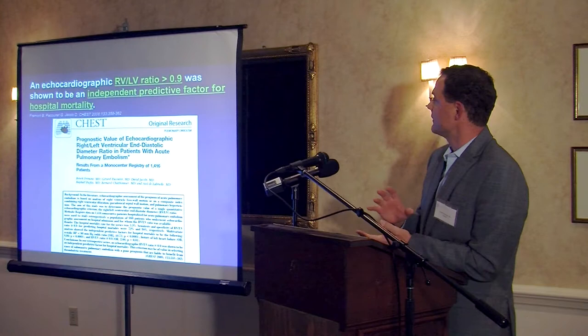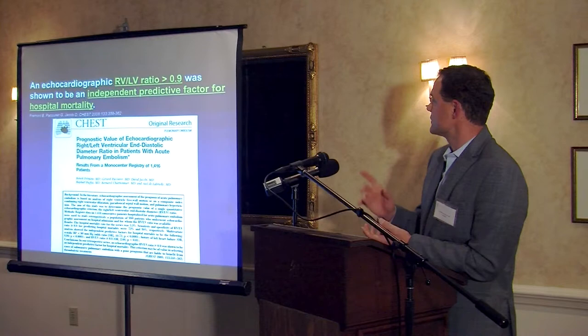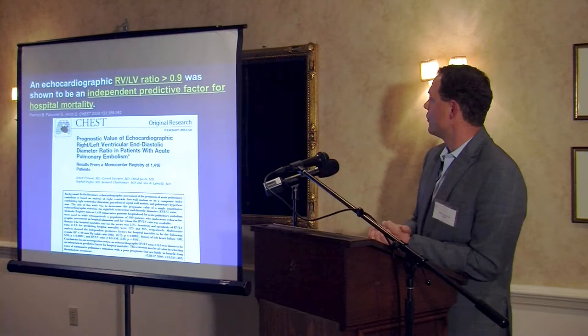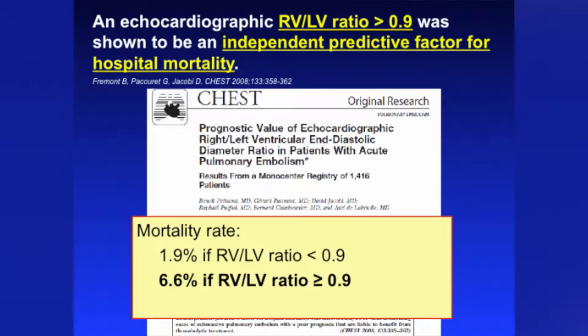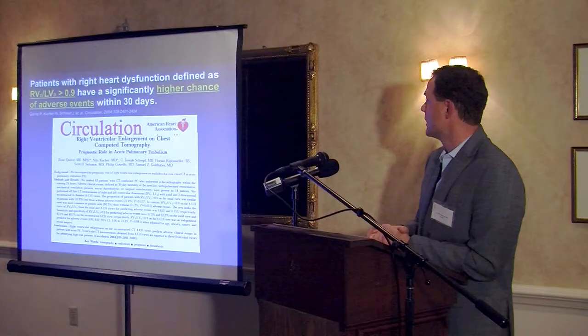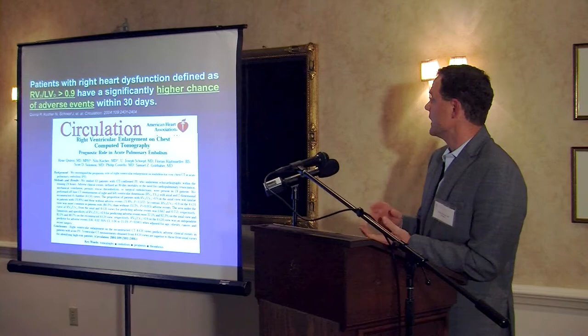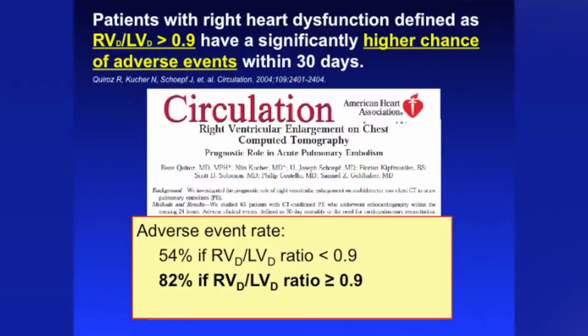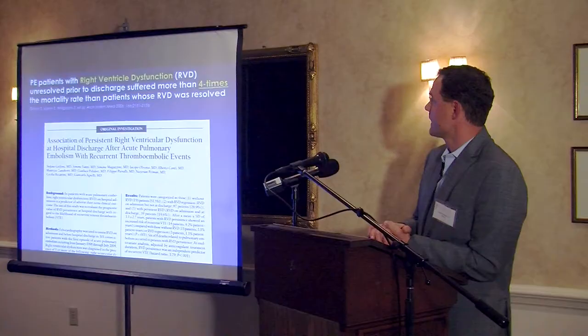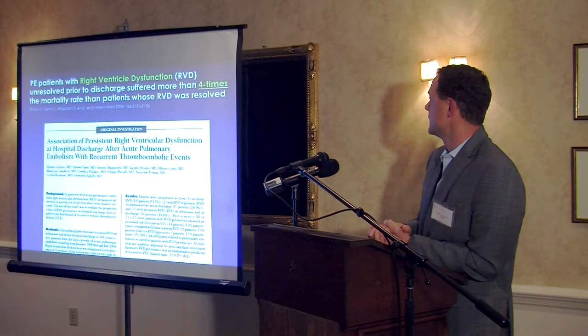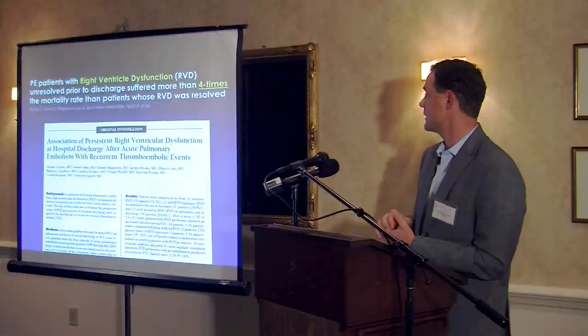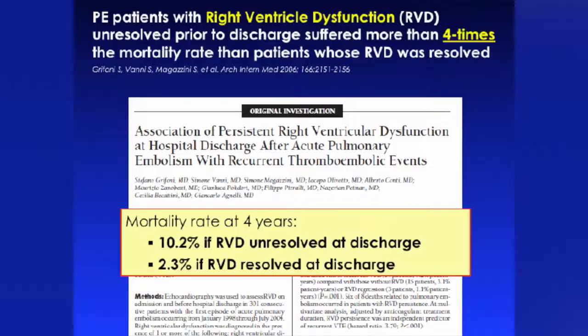A study in CHEST found that an echocardiographic RV-to-LV ratio greater than 0.9 was an independent predictor of in-hospital mortality — mortality went up to 6.6 percent. A study in Circulation found that a high RV-to-LV ratio was associated with a higher chance of adverse events within the first 30 days — up to 82 percent, though this did include patients with massive PE. An Archives of Internal Medicine 2006 study showed that patients with unresolved right ventricular dysfunction at discharge had four times the mortality rate compared to those in whom it was reversed — 10.2 percent mortality at four years versus 2.4 percent if resolved.